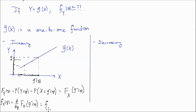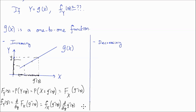But we have an inner function here, so by the chain rule, we also need to take the derivative with respect to y of the inside function, which is g inverse of y. And that's how you find the PDF of y for an increasing function g of x that transforms the random variable x to the random variable y.